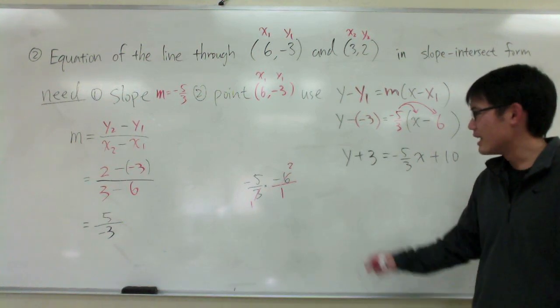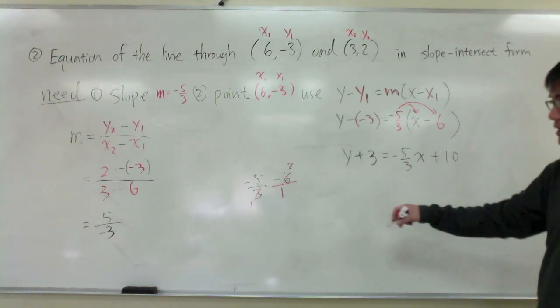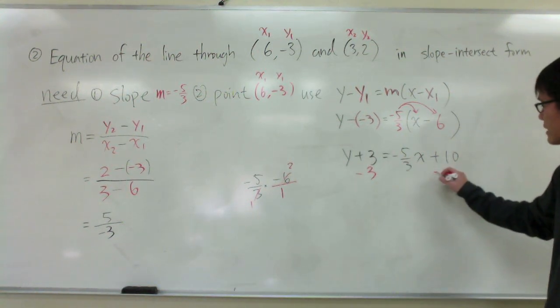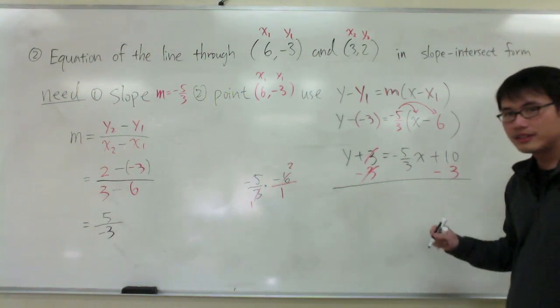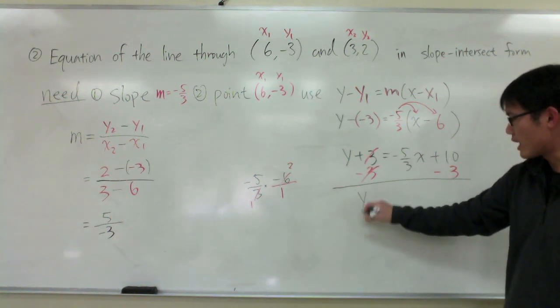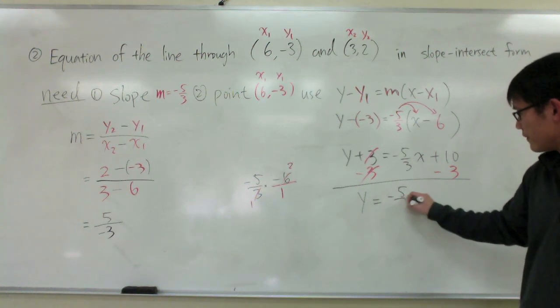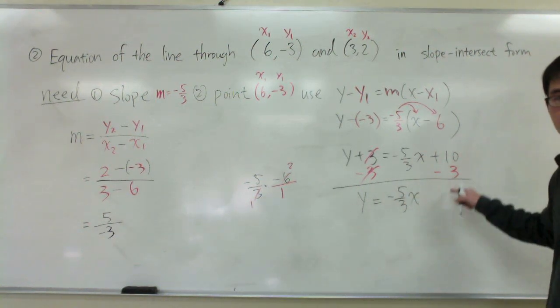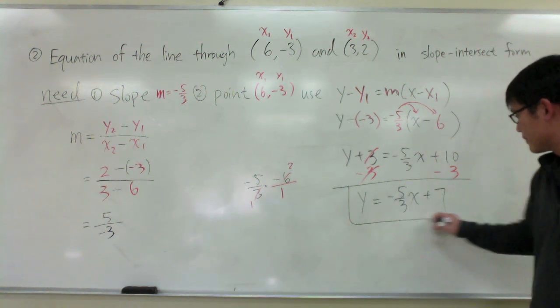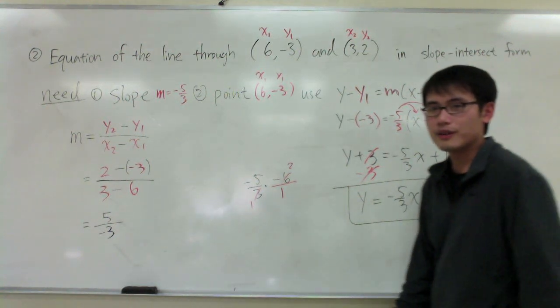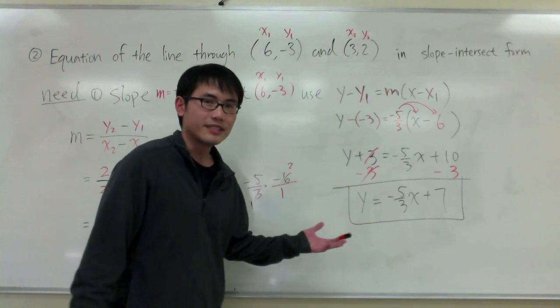And then I just need to isolate the y. I can minus 3 on both sides. And finally, I will get my answer. This is y equals to negative 5 over 3x. 10 minus 3 is equal to 7. Positive 7. And that's it. This is the equation of a line in the slope-intercept form.